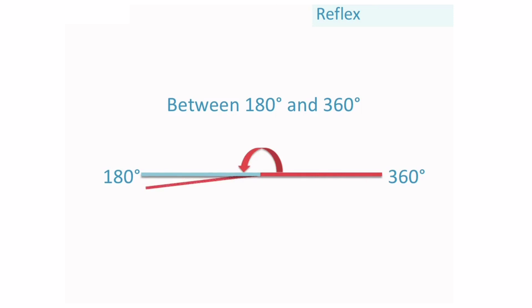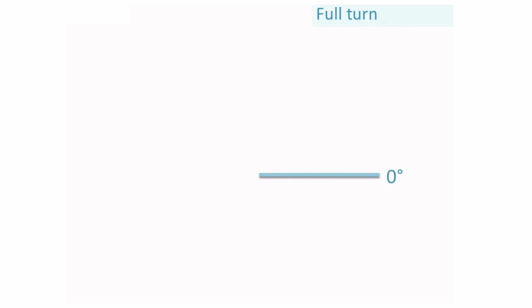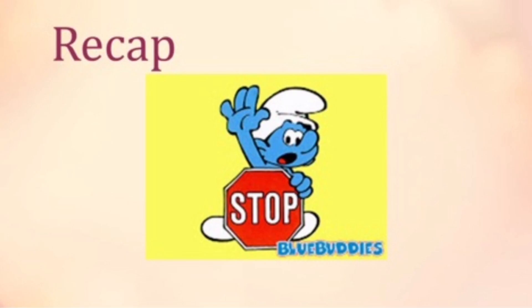Reflex angles are angles that are between 180 degrees and 360 degrees. The following angles are all reflex angles. A full turn is exactly equal to 360 degrees. Now let's quickly have a recap of these angles.